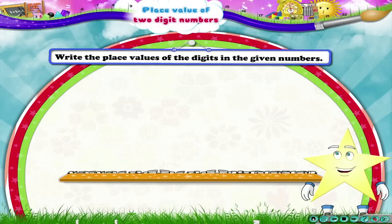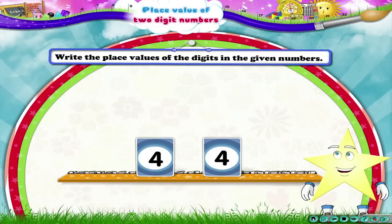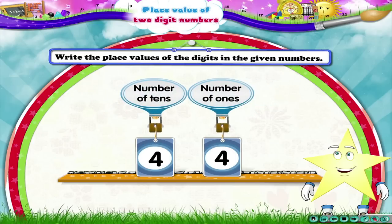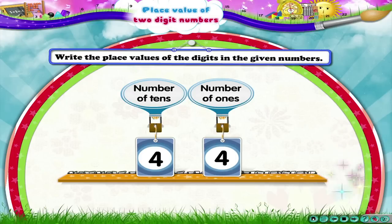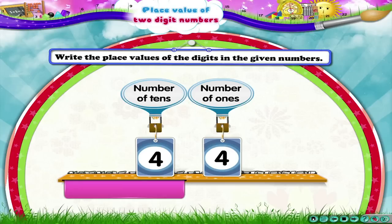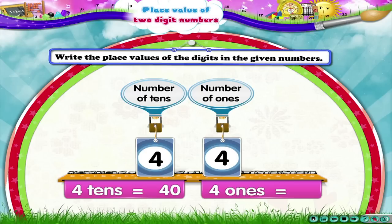In 44, both the digits are 4. Will they have the same place values or different? Both the 4s will have different place values. The 4 in the tens place has place value 40. The 4 in the ones place has place value 4.